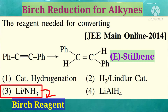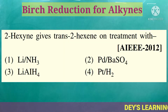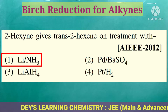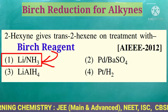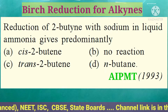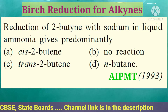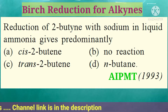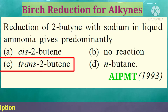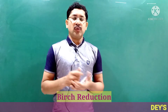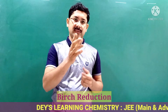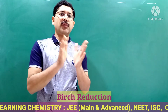Again, in the question paper of AI-TPLE 2012, 2-hexyne gives trans-2-hexene on treatment with lithium ammonia — it is the Bart's reagent, that is option 1. The same question has been set in the NIT paper also: the reduction of 2-butyne with sodium in liquid ammonia gives predominantly trans-2-butene, option C. We are discussing Bart's reduction — that is why two hydrogen atoms are added from the opposite side to give the trans product from an alkyne.